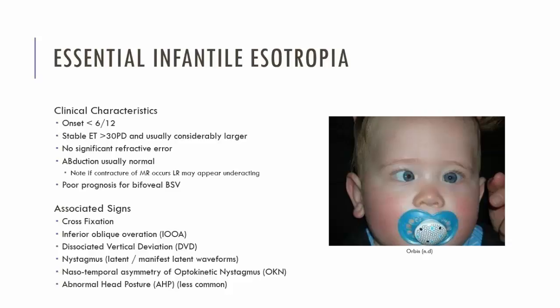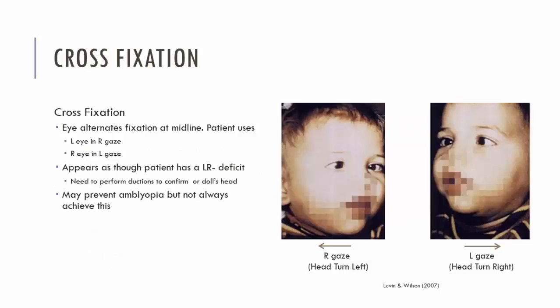Infantile esotropia is also associated with a number of clinical features or signs. These include cross-fixation, inferior oblique overactions, DVD, latent nystagmus, nasal-temporal asymmetry of OKN, and some patients may have an abnormal head posture. The patient doesn't need to have all of these associated clinical features — they may just have some. However, a large angle deviation with an early onset history and these associated signs gives you a clear diagnosis of essential infantile esotropia. Now let's go through each of these associated signs, commencing with cross-fixation.